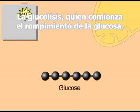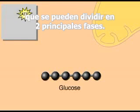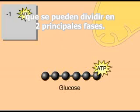Glycolysis, which begins the breakdown of glucose, is a series of ten enzyme-catalyzed chemical reactions that can be divided into two main phases.